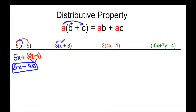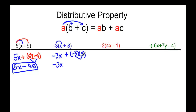Try again. Negative three times X is negative three X, plus negative three times eight — that's the way to think about it. So negative three X is just negative three X, and when we apply the operation we have plus negative 24, or negative three X minus 24.